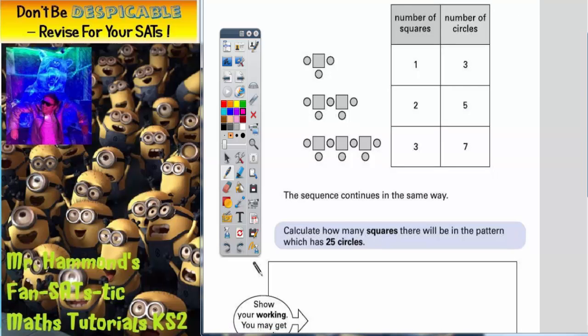Now what we need to do is try and find a rule that's going to help us. Some people may be able to spot the rule quite easily to get from squares to circles. It's not going to be a difficult rule, and it's got to be the same rule that works each time. So 1 to 3 is add 2, 2 to 5 is add 3, 3 to 7 is add 4.